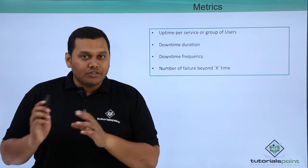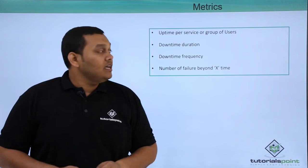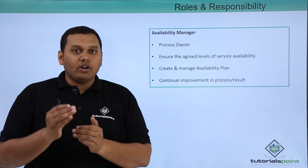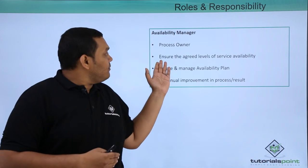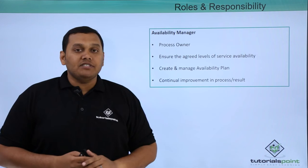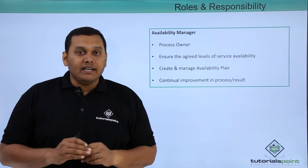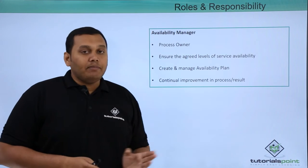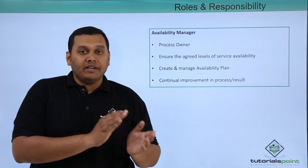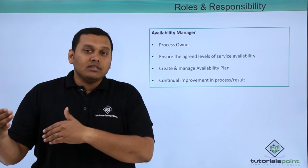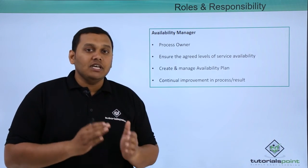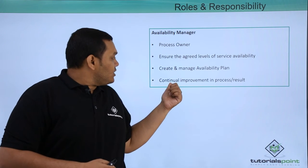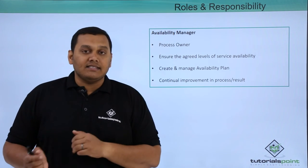Coming to roles and responsibilities in availability management, the main role is the availability manager. He is the process owner for availability management. He ensures that agreed levels of service availability are maintained and achieved. He creates and manages availability plans based on reliability, serviceability, and maintainability, as well as business and non-business hours. He is also key in driving continual improvement in processes and results.